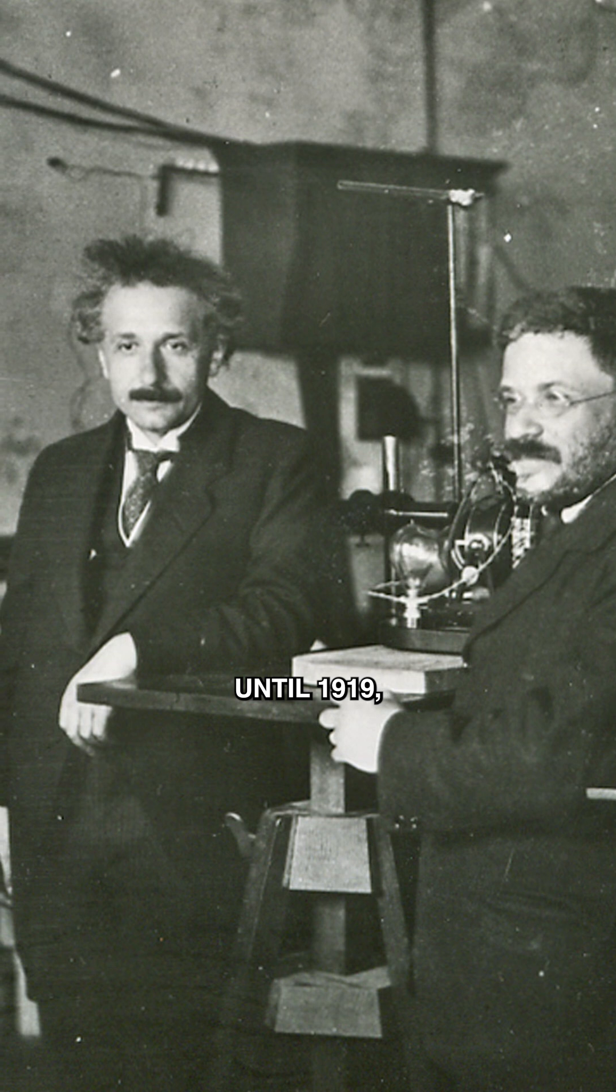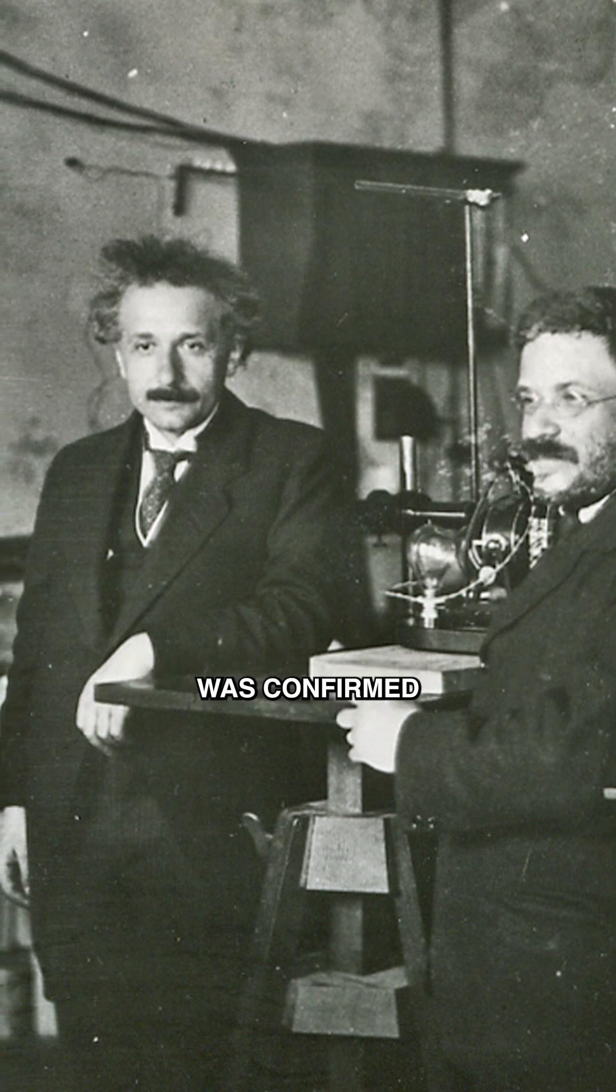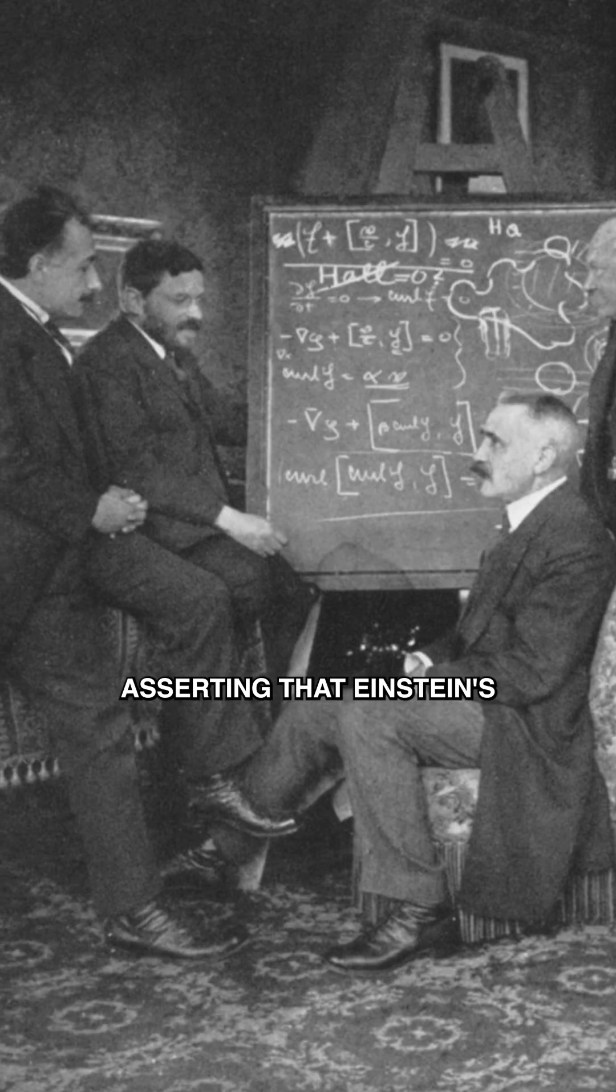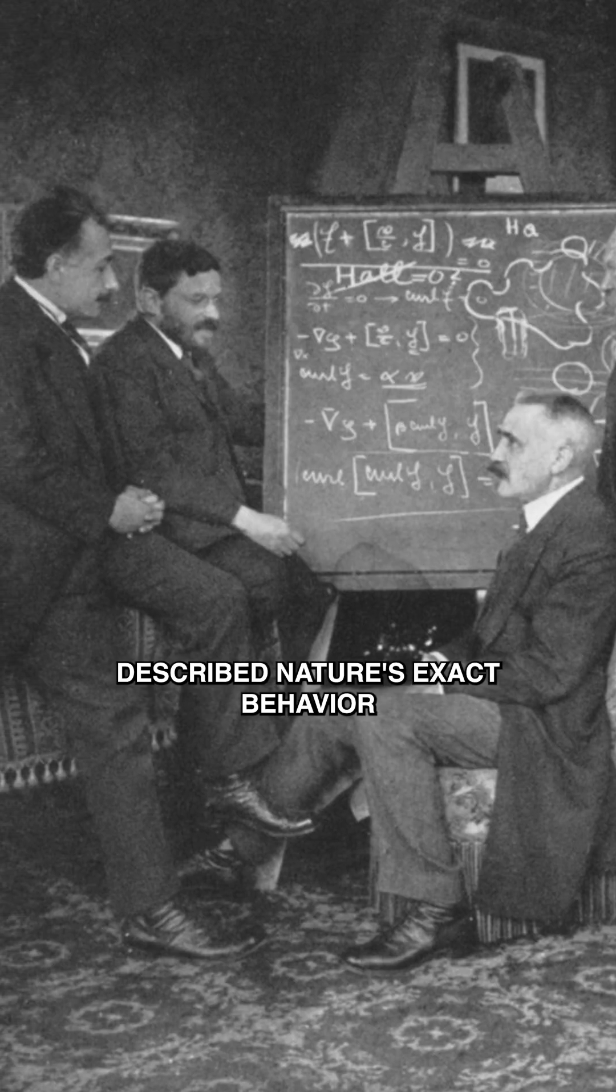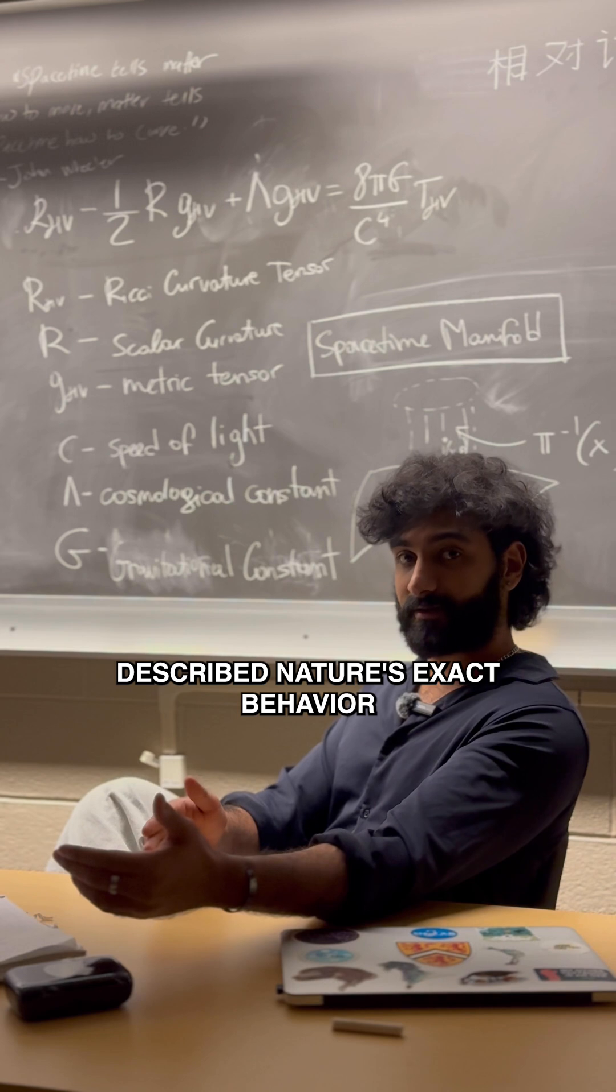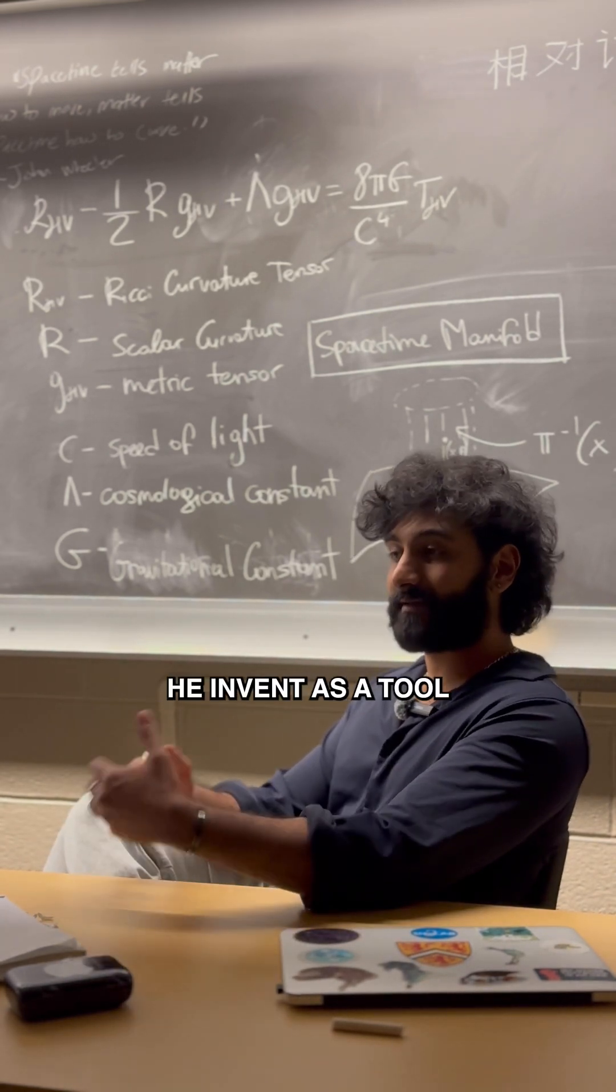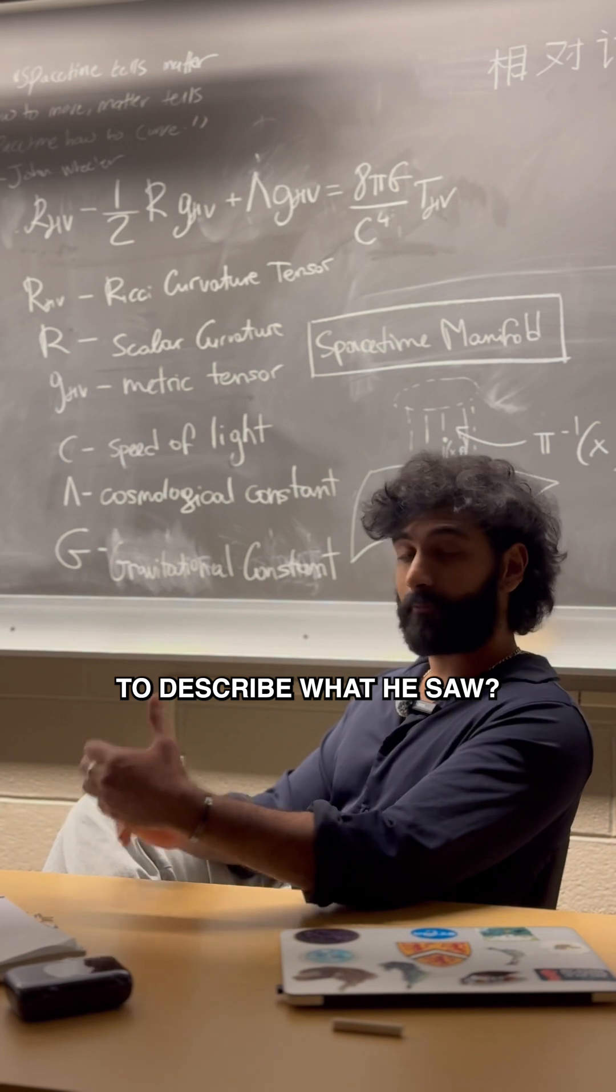Until 1919, when his theory of general relativity was confirmed by experiment to incredible accuracy, asserting that Einstein's mathematics described nature's exact behaviors. Did Einstein discover the mathematics or did he invent it as a tool to describe what he saw?